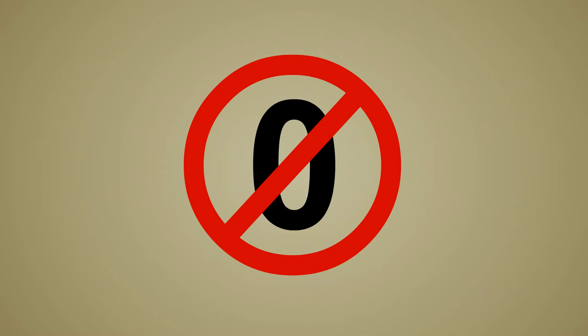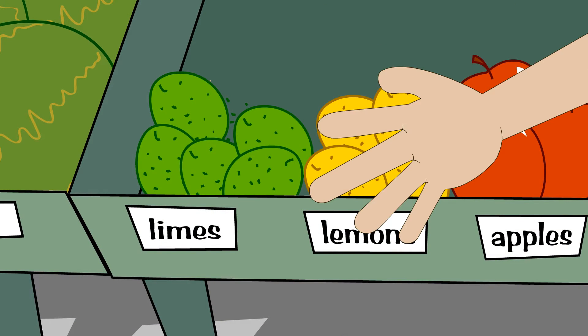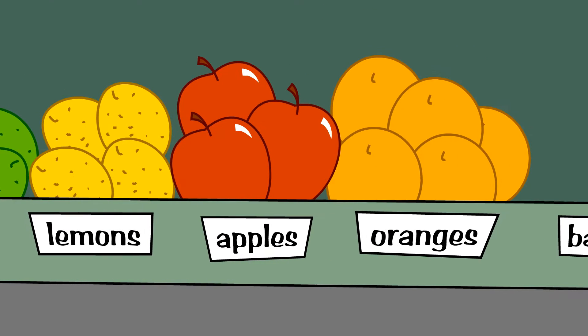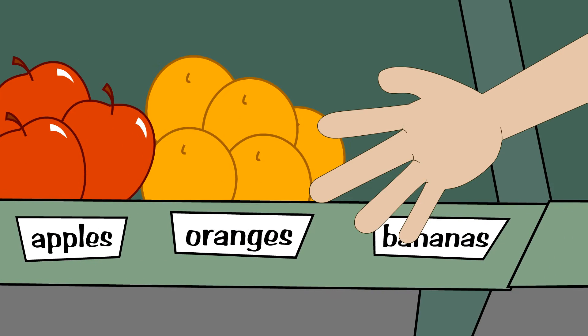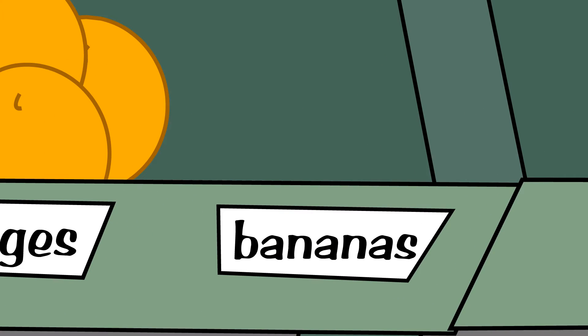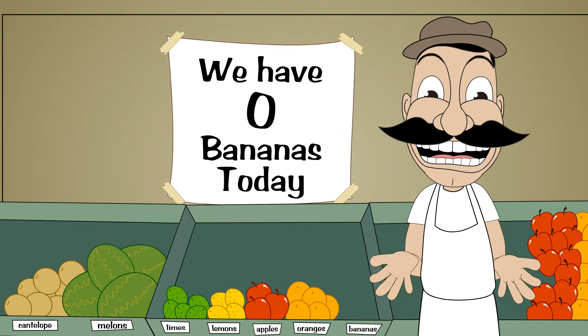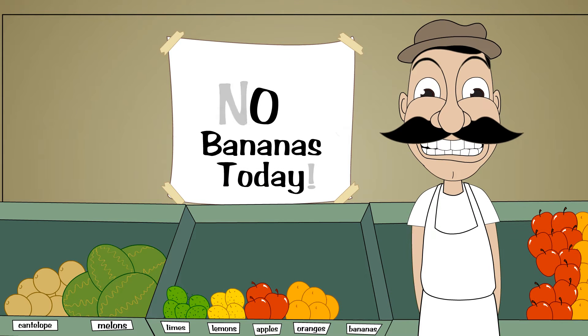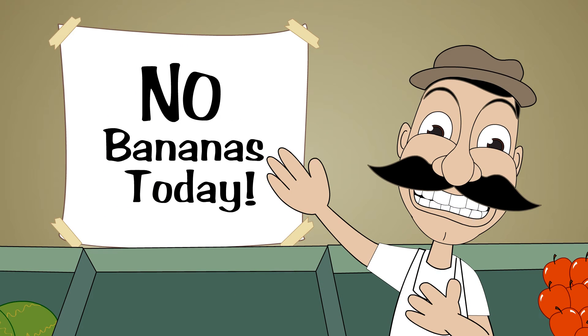Natural numbers do not include the number zero. When people started counting things it probably seemed pointless to invent a number for no things. Why would you say the number of bananas we have is zero when you could just say, yes, we have no bananas.